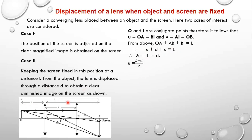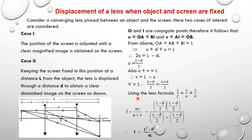Since U plus V equals L, we get V equals L minus U. Substituting U equals (L minus D)/2, we get V equals (L plus D)/2. Substituting U and V into the lens equation and making F the subject gives F equals UV over (U plus V), which works out to F equals (L squared minus D squared) divided by 4L.